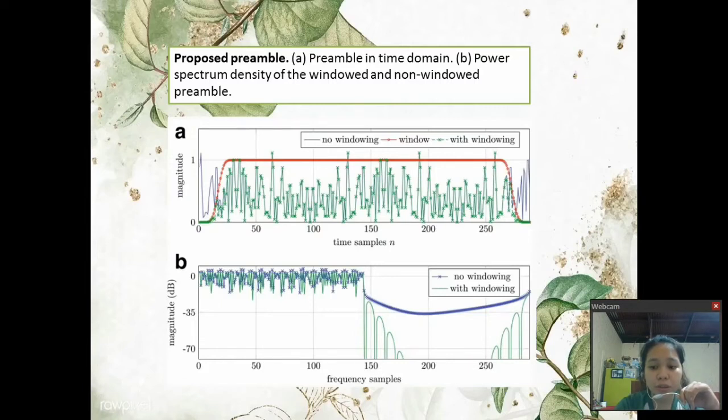While the non-windowed preamble P1 produces non-negligible spectrum side lobes of negative 35 dBc, the proposed smoothing window in PW is able to drastically reduce the OOB several orders of magnitude below what traditional OFDM can achieve.